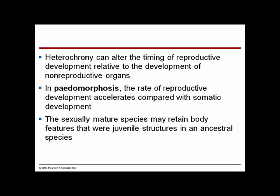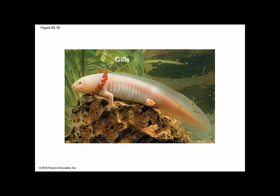Heterochrony can alter the timing of reproductive development relative to the development of non-reproductive organs. In pedomorphosis, the rate of reproductive development accelerates compared with somatic development, and the sexually mature species may retain body features that were juvenile structures in an ancestral species. The axolotl is a salamander from Central America — this is an adult salamander, but normally gills are a characteristic of juvenile salamanders. In this completely aquatic species, gills are a characteristic of the adult. Adults of some species retain features that were juvenile in ancestors, growing to full size and reproducing while retaining larval characteristics including gills.